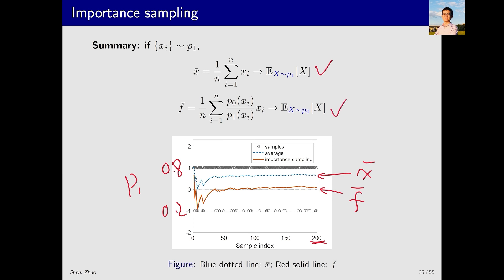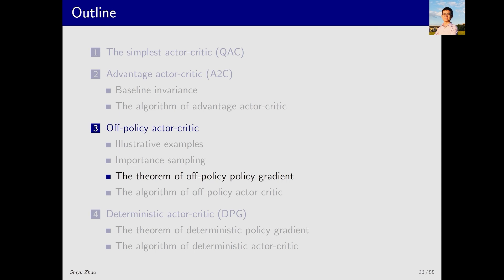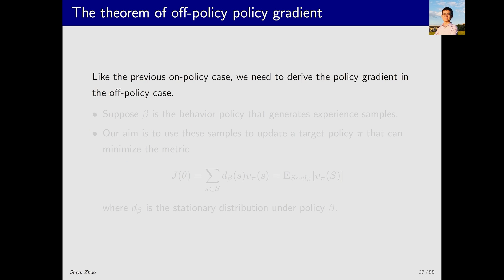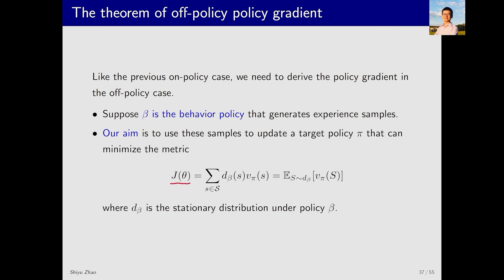We can apply the importance sampling technique to policy gradient to perform off-policy learning. There are two steps: first derive the gradient expression, then apply gradient-based optimization. Suppose beta is the behavior policy used to generate experience samples, and our goal is to optimize the objective function J(theta), where theta is the parameter of the target policy pi. J(theta) is defined as the sum over all states s of d_beta(s) times V_pi(s), where d_beta(s) is the stationary distribution under beta and V_pi(s) is the state value under pi.